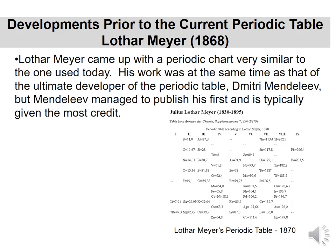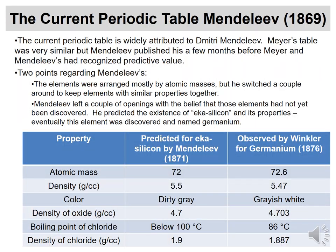About a year after Meyer, up comes Dmitry Mendeleev, who is now known as the father of the periodic table. What gets him more credit than Meyer is, for one thing, he published his results before Meyer did. And second, he arranged elements by atomic masses, but if a property didn't look right, he would change that order to fix it.